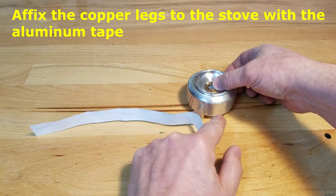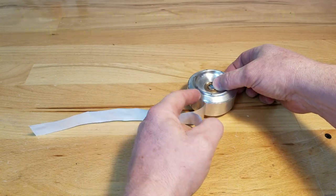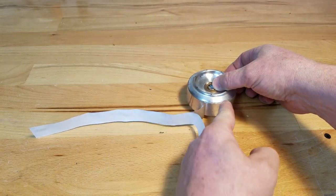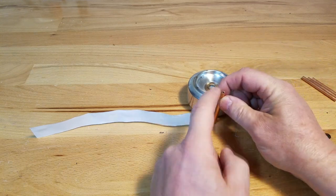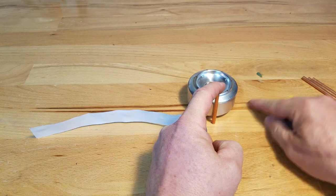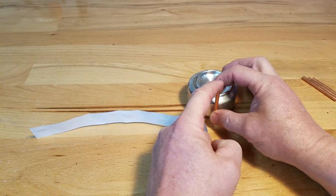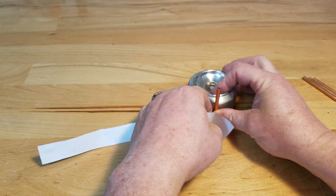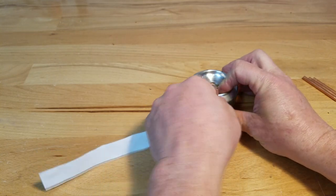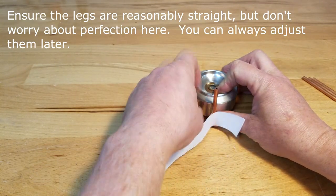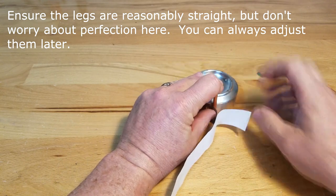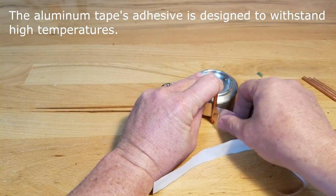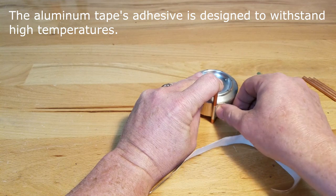Peel back some backing from the aluminum foil tape and start the tape about halfway between two marks. Take one leg flush with the surface and bottom of the stove, hold it in place, and wrap that tape around the leg. Don't worry about it being perfect. Do this for all four legs.